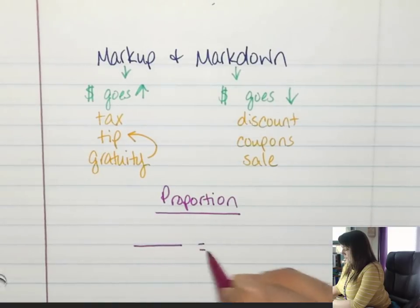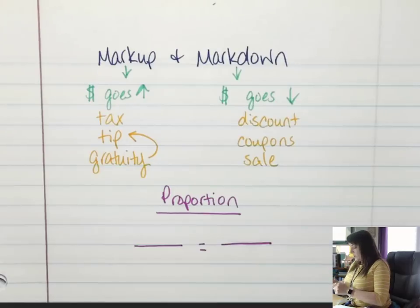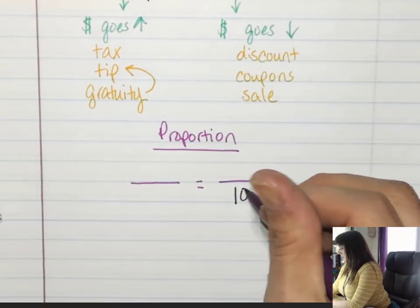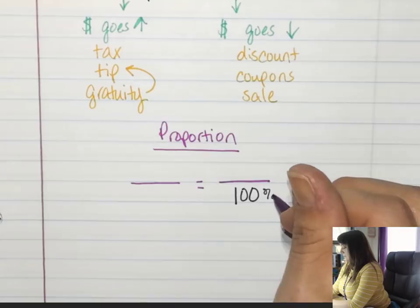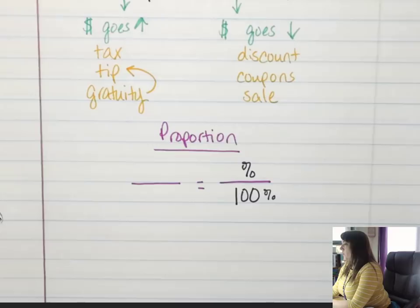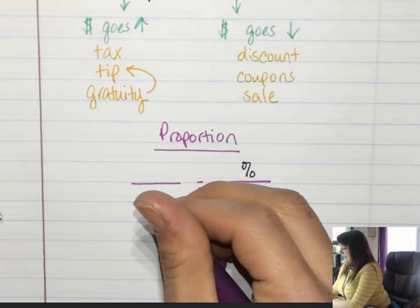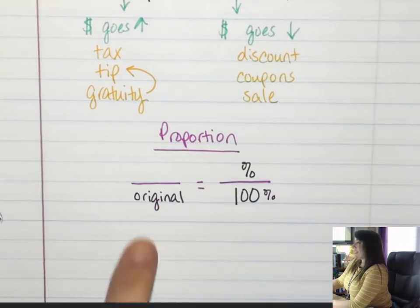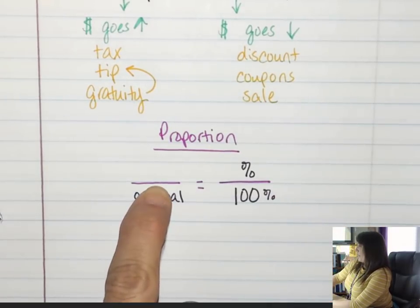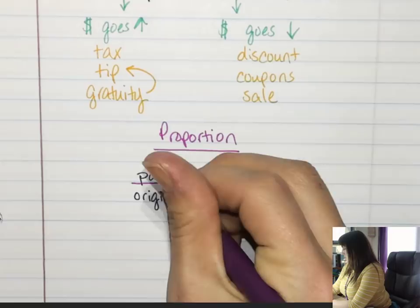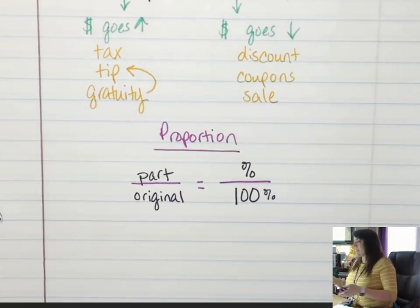The way we are going to set up our proportion - we know that for a proportion, this is a hundred because that's the hundred percent. This is the percent of whatever we're finding. This is going to be my original amount. This is going to be the part - it's either going to be the tax or the discount, whatever.